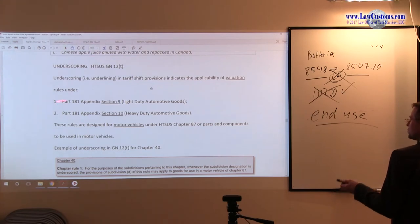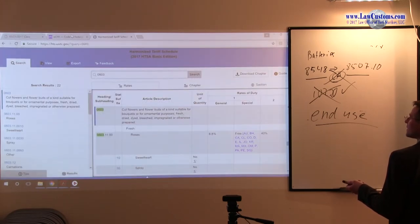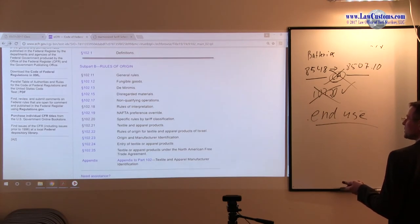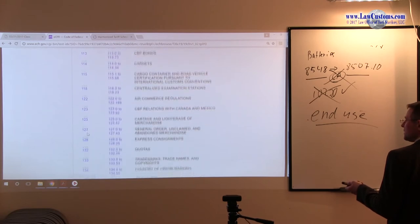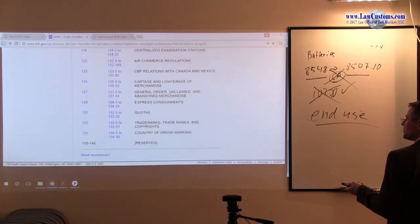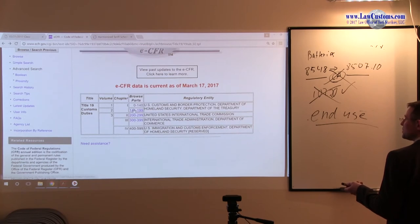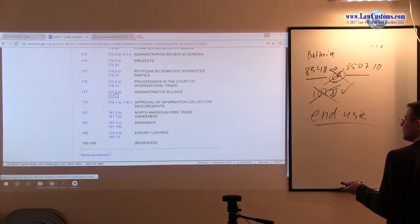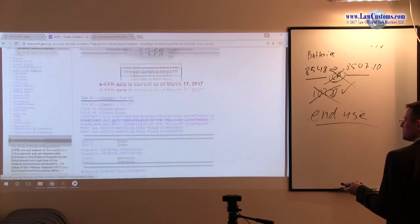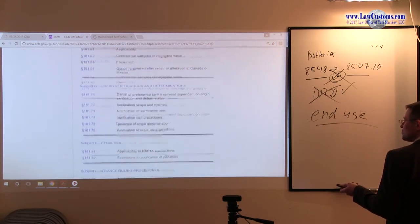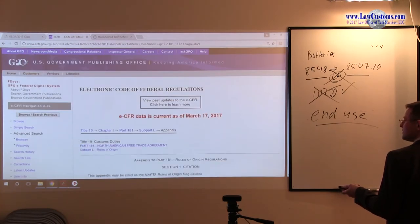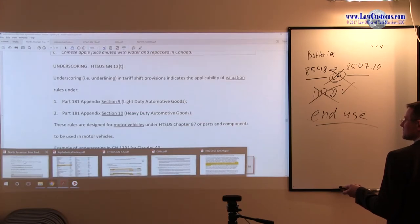The key here is to know that you have 181 appendix and 181 appendix is located at the end of part 181. And part 181 of course is the part that deals with the North American Free Trade Agreement regulations, not the marking part but the substantive part. Recall that 102 is marking, 181 is the substantive part of the CFR and General Note 12. So at the very end you have this appendix.